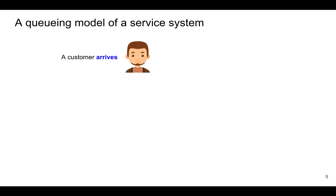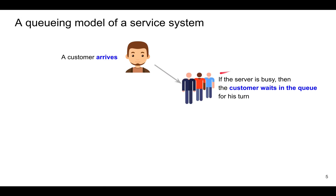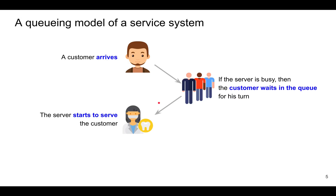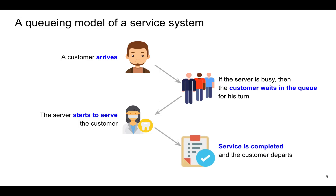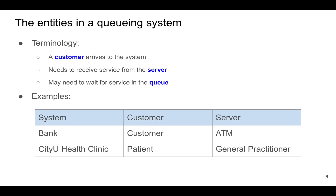Here's how things work in a queuing model. When a customer arrives, he checks if the servers are busy. If there's no free server, the customer will join the queue and wait until his turn. The server will start to serve the next customer whenever the server is free. When a customer's service is completed, the customer will depart and leave the system. So in a queue, there are customers and there are servers who give service to the customers, and customers may have to wait in the queue to receive service.